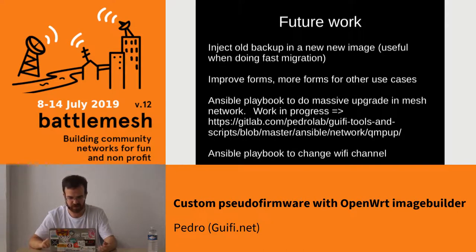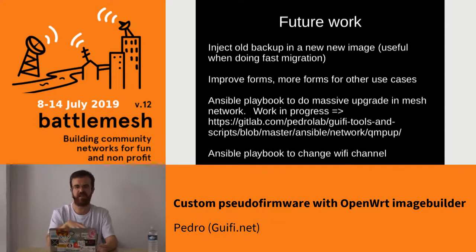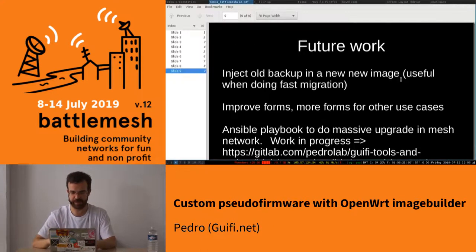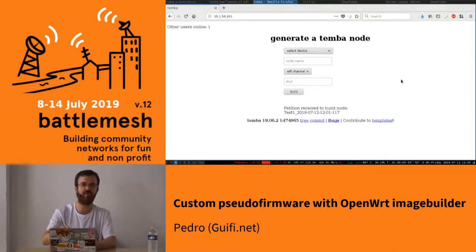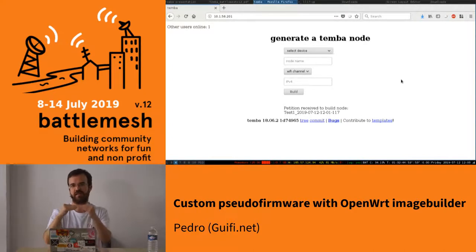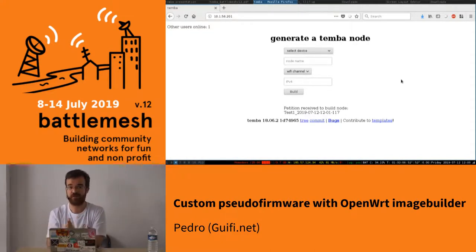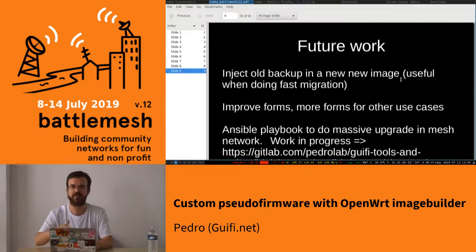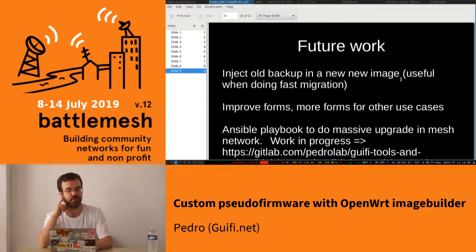The future work: what can we do after this is an easy way to take an old backup of a firmware that is deprecated and put it in a new image. So instead of having a form, it would be: upload your backup here. It will take the most recent packages and kernel version. And this sometimes works because there's a lot of innovation in a lot of layers, and you can have interesting improvements. This means that breaks could break configuration backward compatibility, but I think it's sometimes interesting to have.